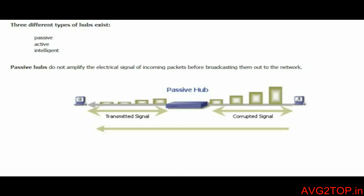There are three types of hubs: Active, Passive, and Intelligent. The passive hub does not amplify the electrical signal of the incoming packet from any computer or device before broadcasting them across the network.